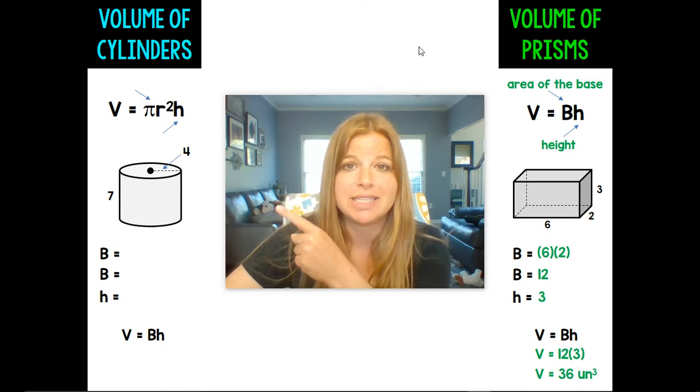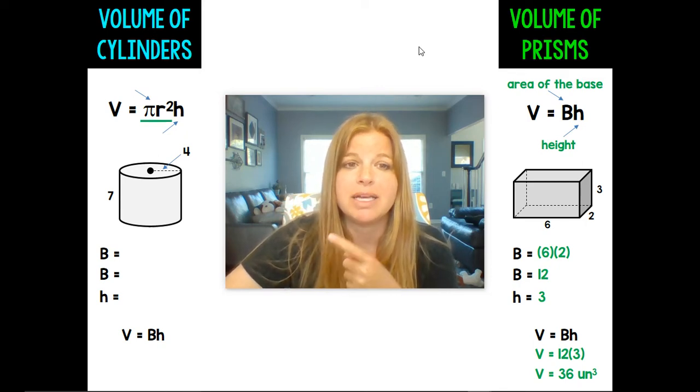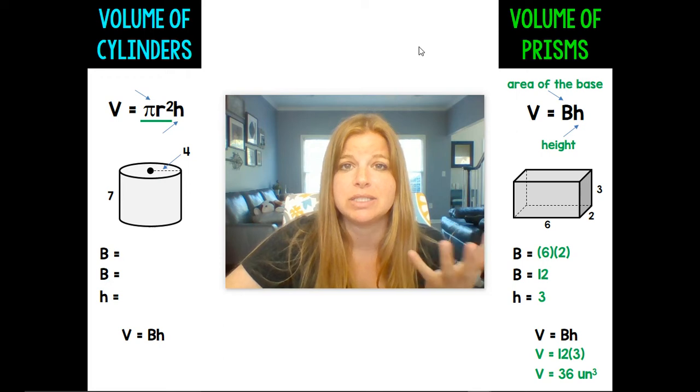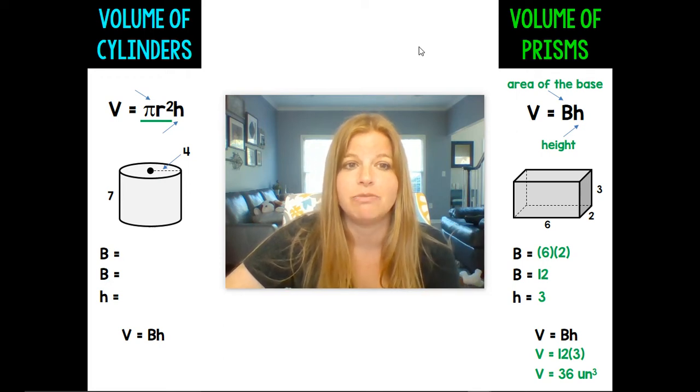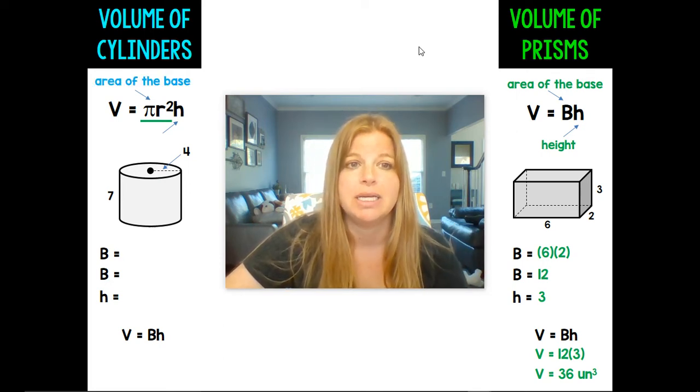Over here for a cylinder, now pi r squared is the base. It's the circle. So it's really the exact same formula. It's base times height. So we're going to take the area of the circle, multiply it by the height.